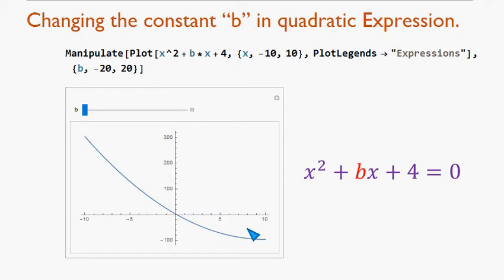I have made a graph here for x² + bx + 4 = 0. Now in this equation, we will take a range of b from -20 to 20. We have a slider here. We will slide this from left to right and see what will happen to this graph.